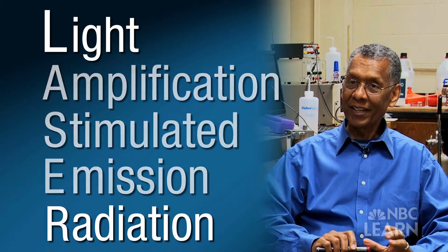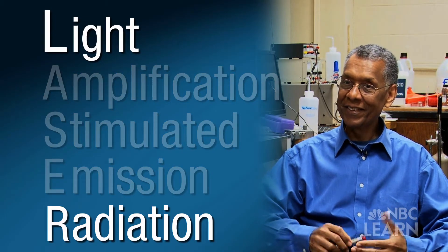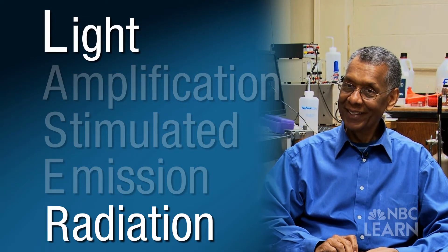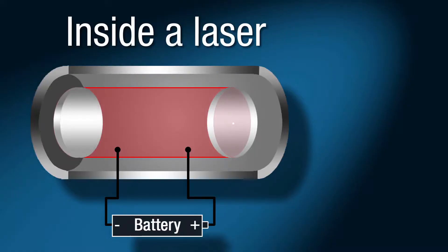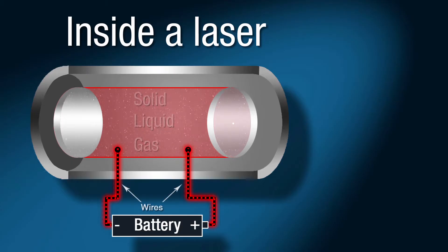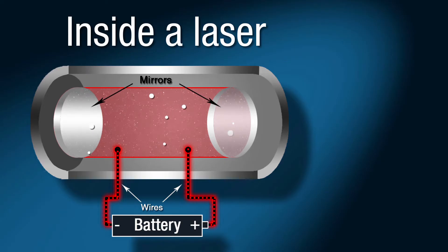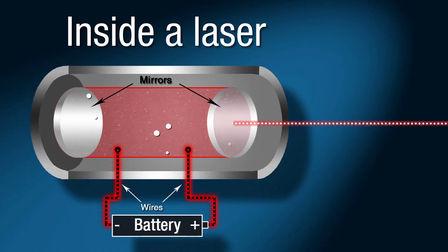The first and last letters — the light and the radiation — are actually the same thing. All the light that you see comes from an atom giving off radiation. Inside a laser is a material; it could be a solid, liquid, or gas. The atoms of that material need to be excited or stimulated in order for light to be produced. Mirrors on either end cause the light to bounce back and forth inside the laser cavity until there's enough energy for the light to exit the laser.